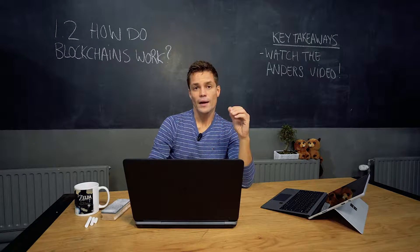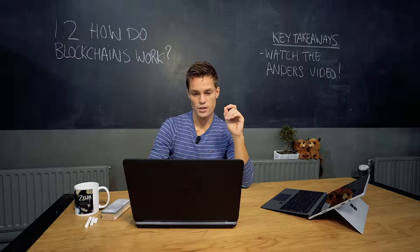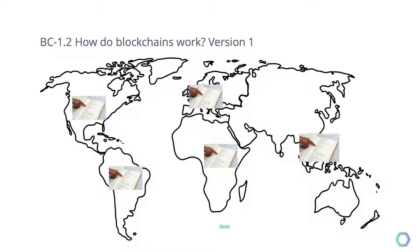So we now know what blockchains are, but we don't know how they work — and that's what this session is all about. Let's go to the next slide where we see a geographical overview of the world with five nodes spread across it. As you can see instantly, this image is distributed.